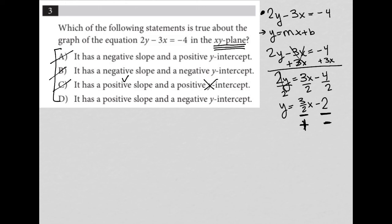Lastly, choice D, it has a positive slope. Absolutely true. And a negative y-intercept. Absolutely true. We see that here. Three halves is my slope. It's positive. Negative 2 is my y-intercept. It's negative. Therefore, choice D is the best answer here.